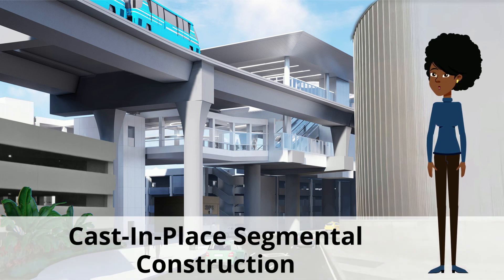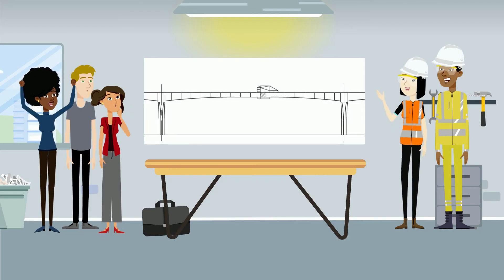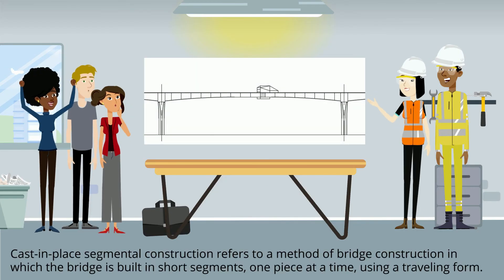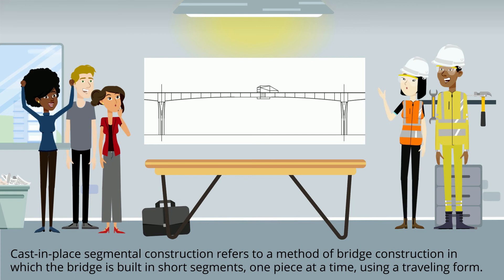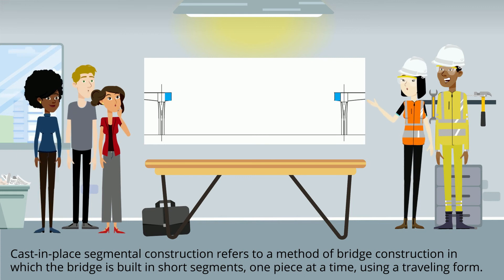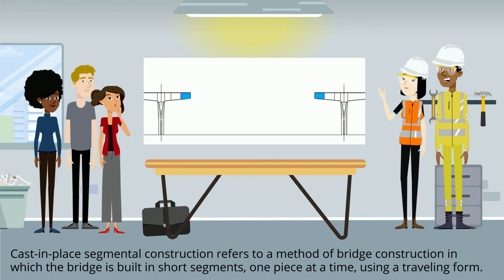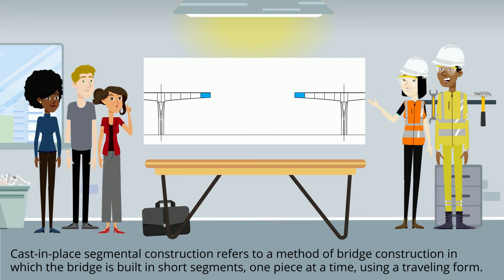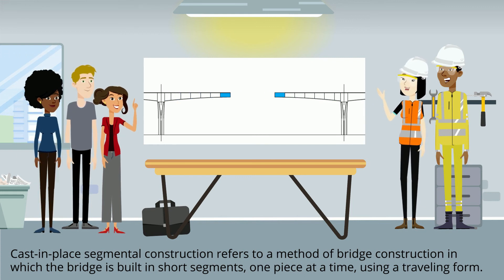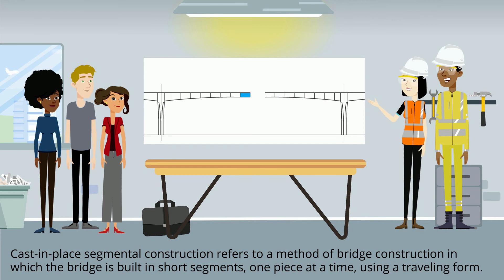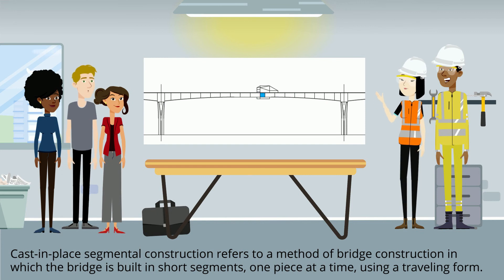Cast-in-Place Segmental Construction refers to a method of bridge construction in which the bridge is built in short segments, one piece at a time, using a traveling form.